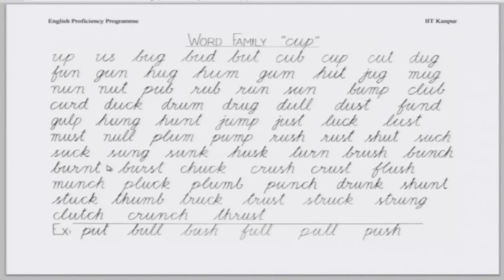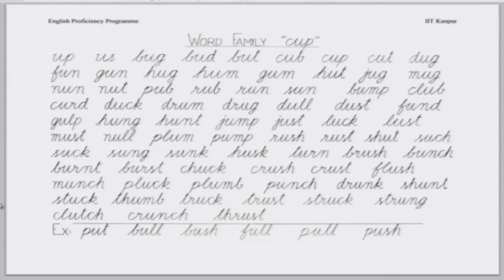Just a minute. Akshat. Burnt, burst, chuck, crush, truss, flush, shunt, punch, plug, plump, drunk. This word 'shunt' is new — in an electric circuit, you have something called a shunt. Mohita. Stuck, thumb, truck, struck. So for 'U', this is a major sound pattern and this is a minor sound pattern.